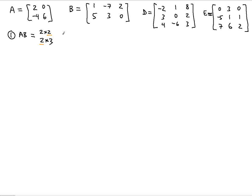Since the inner numbers are the same, the final result — the product itself — is going to be 2 by 3. You take the outer numbers from left to right: 2 by 3. So your result is going to be a 2 by 3 matrix. Now let's see how we're going to find the entries of the 2 by 3 matrix AB.